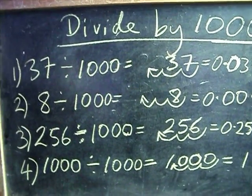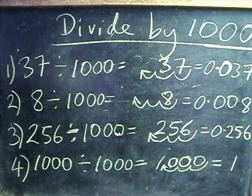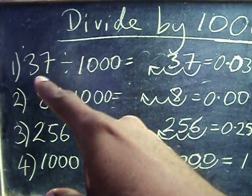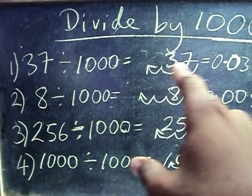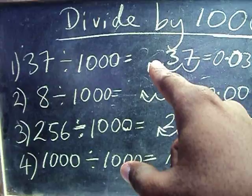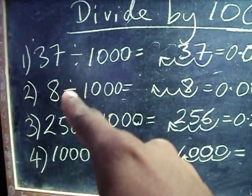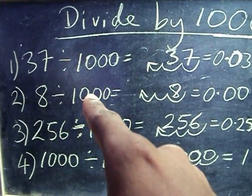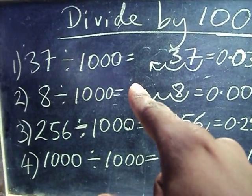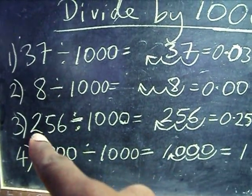When we divide by 1,000, we shift the decimal point three places to the left. For example, 47 divided by 1,000: the decimal point is there, you shift once, twice, three times, and replace with a zero, so it becomes 0.047. Another example: divided by 1,000, you shift the decimal point one, two, three times, put the point and two zeros, so you get 0.008.